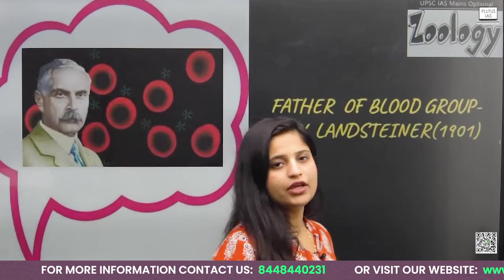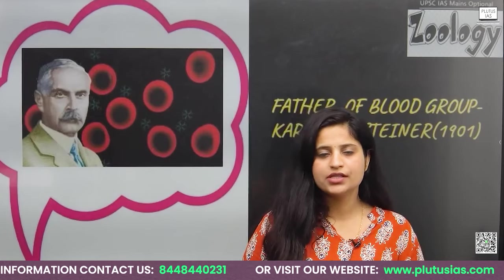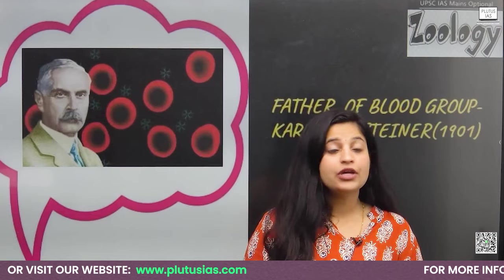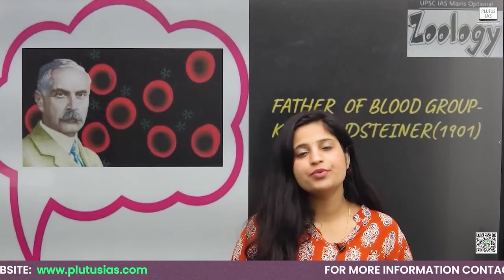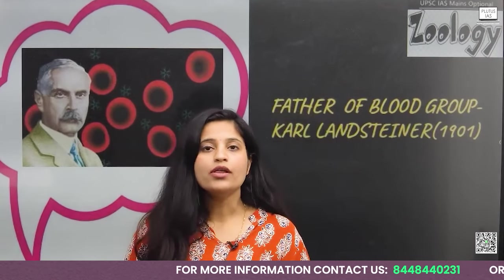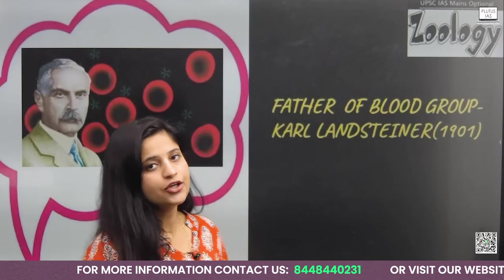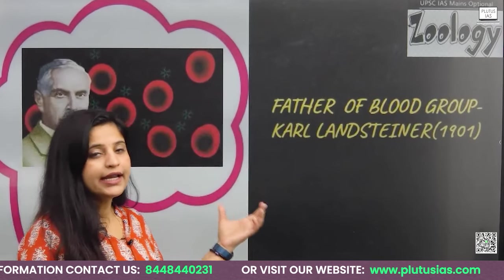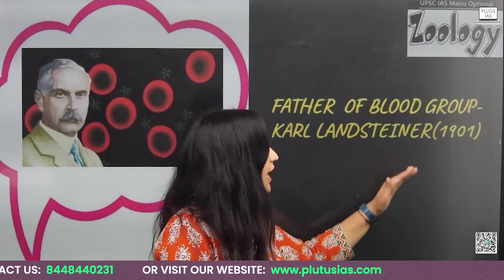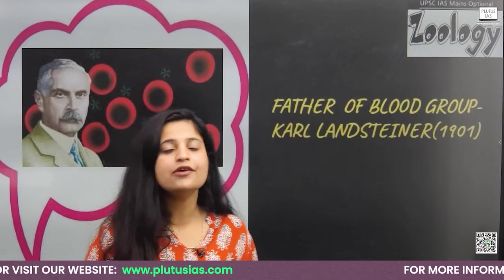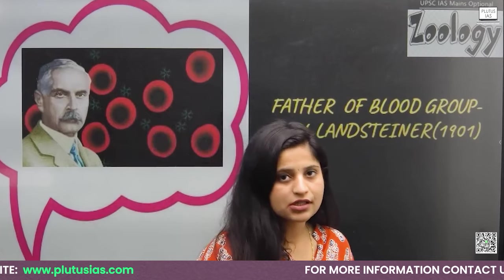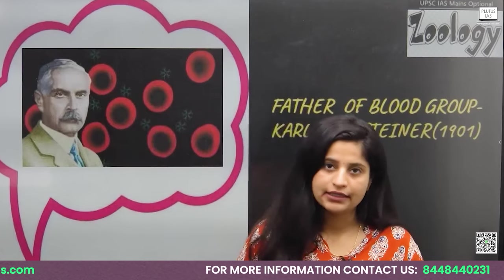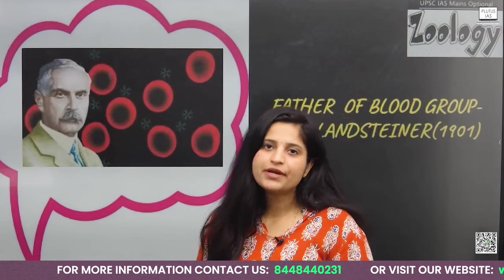Who is the father of blood group? We know that we have a proper ABO system and according to this system, we have four types of blood group: A, B, AB, and O. The father of blood group is Karl Landsteiner. He discovered the blood group in 1901 and also received the Nobel Prize for his discovery in 1930. The ABO blood group system is not only present in humans — it is also present in apes, chimpanzees, and gorillas.